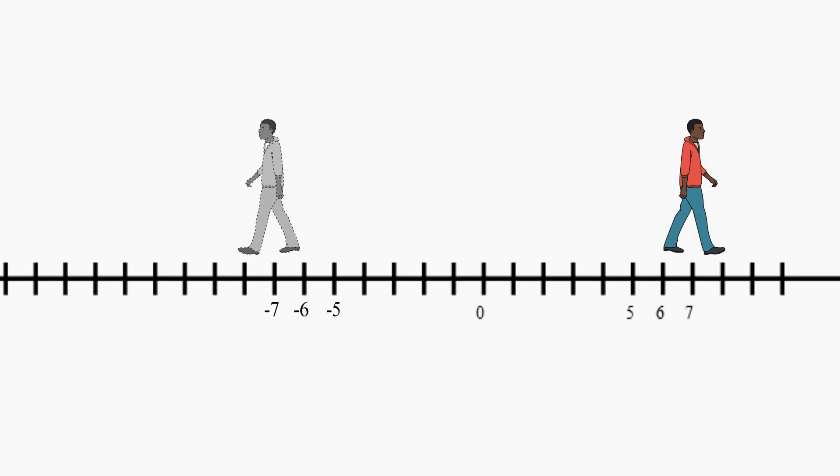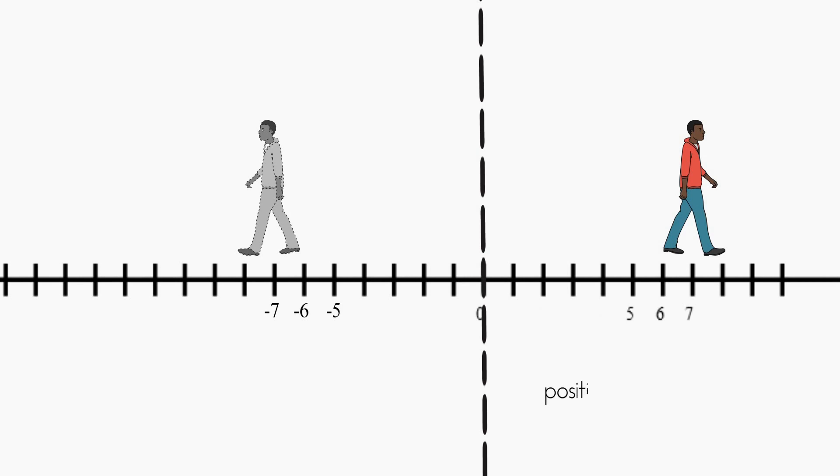Each of those numbers has an opposite too, a positive number greater than zero. The positive numbers and negative numbers are reflections of each other across zero.